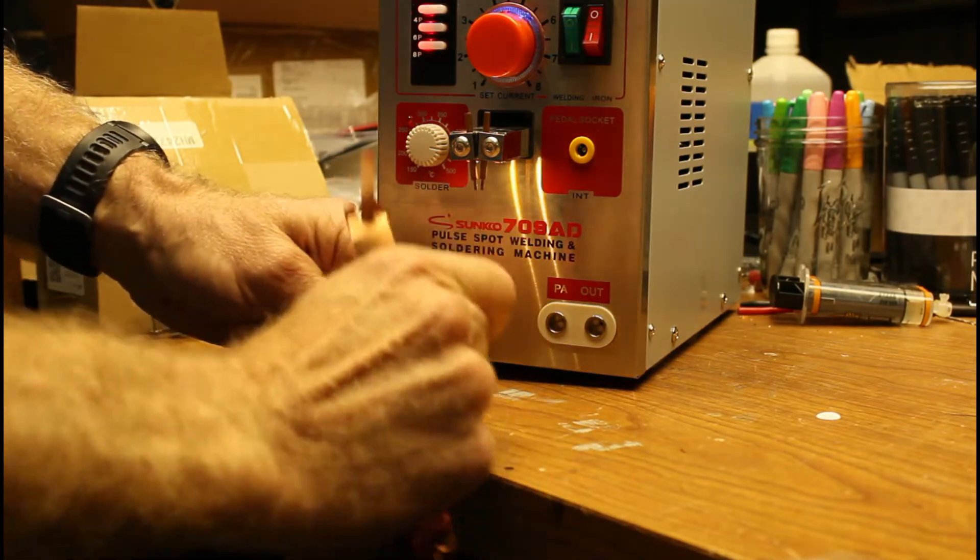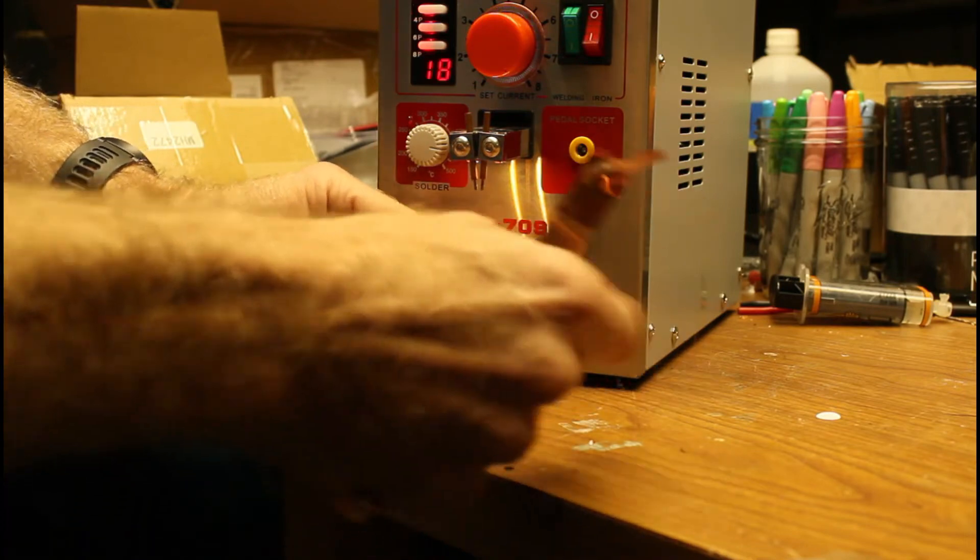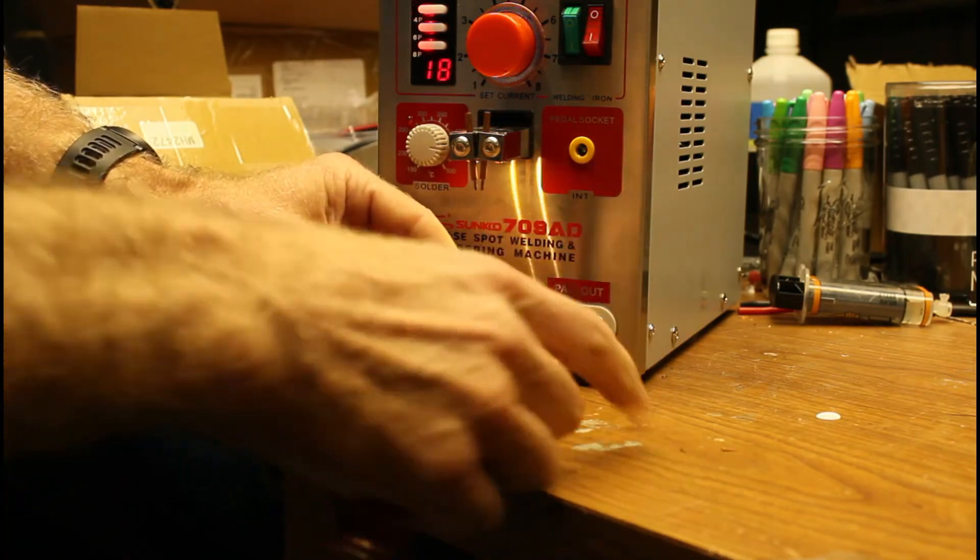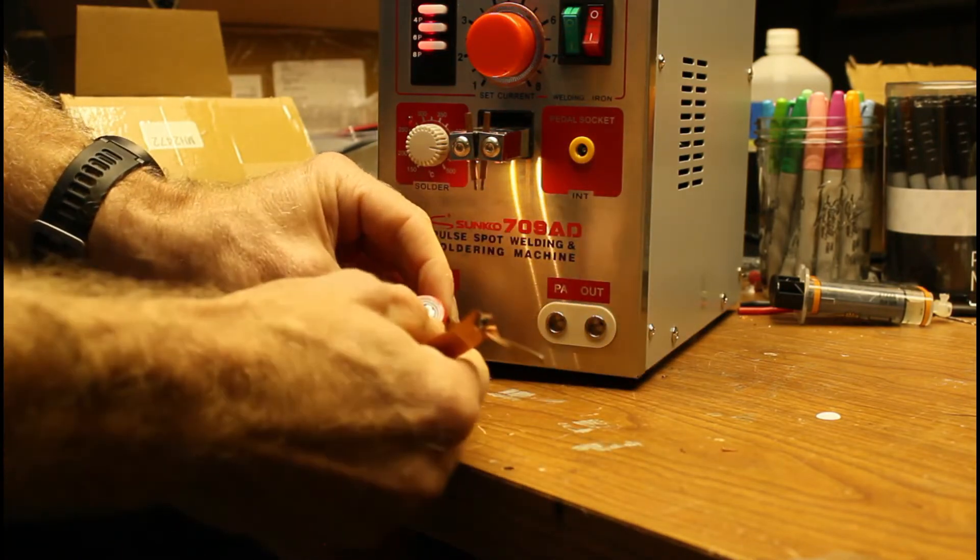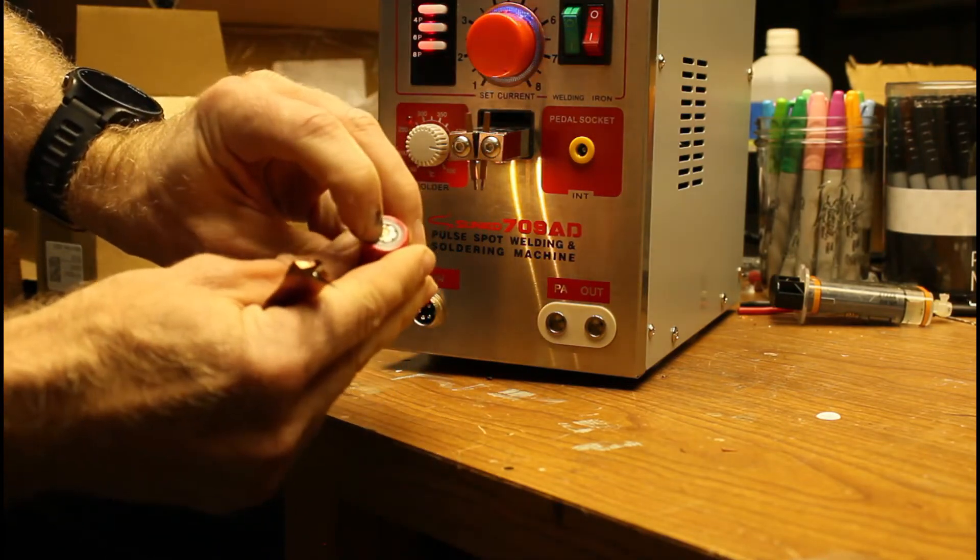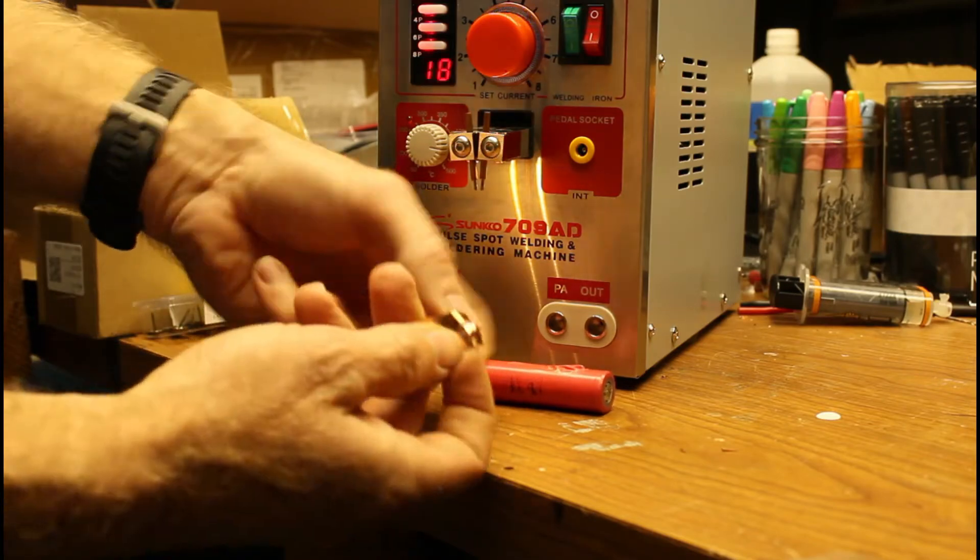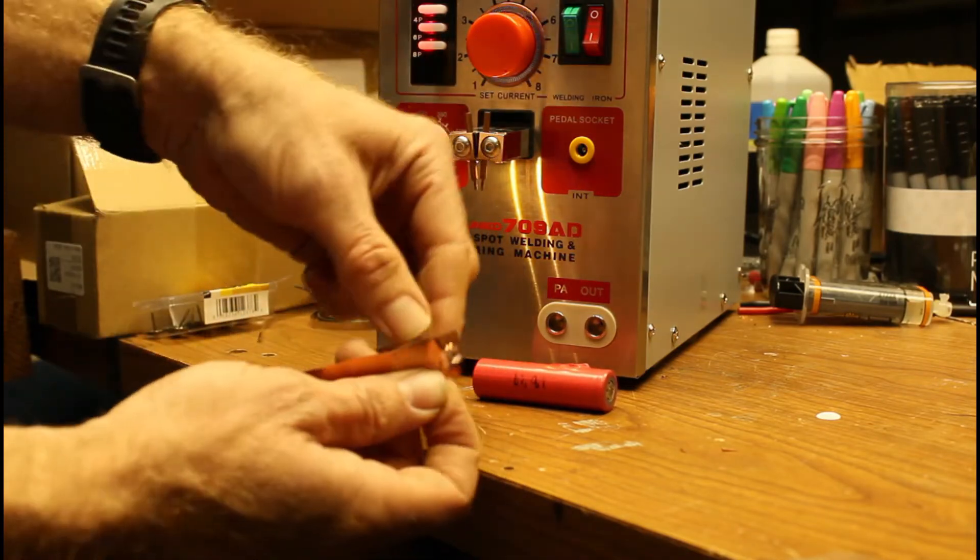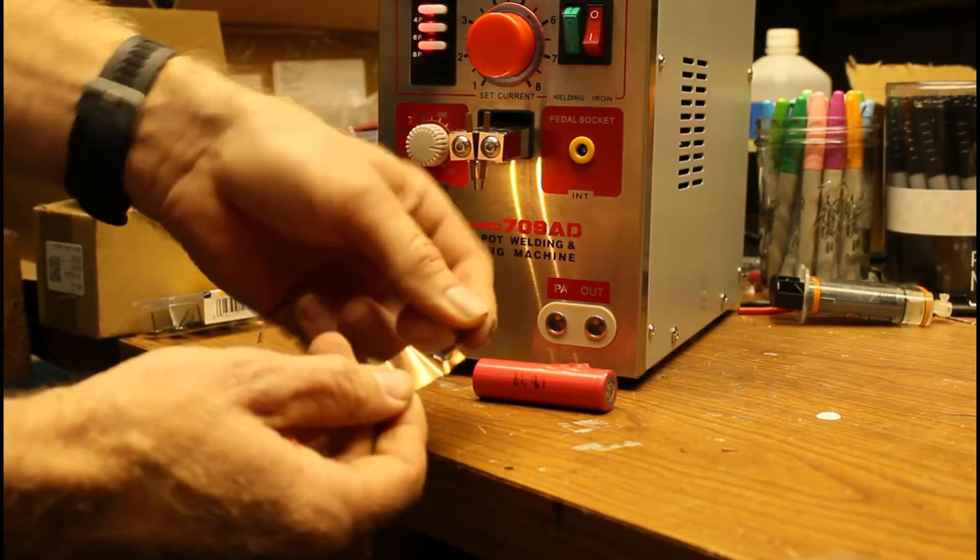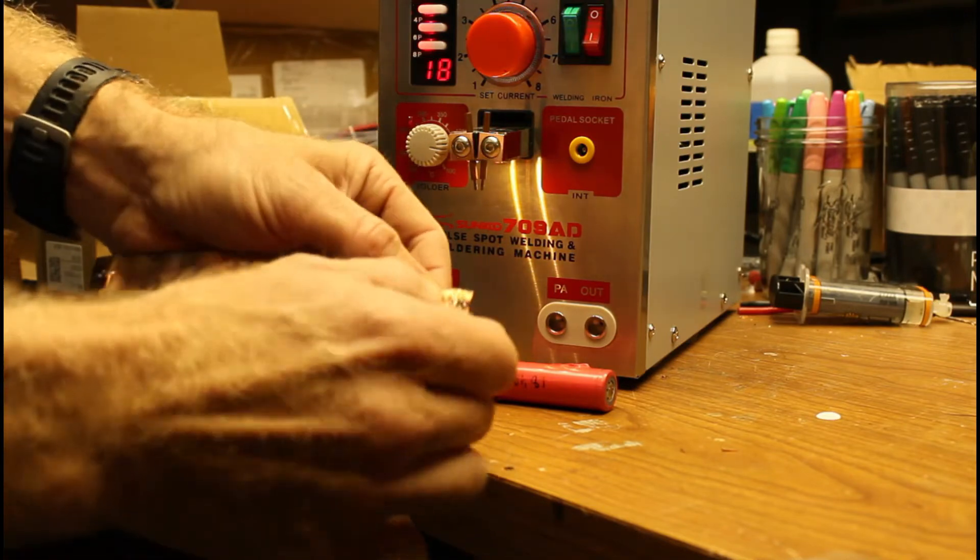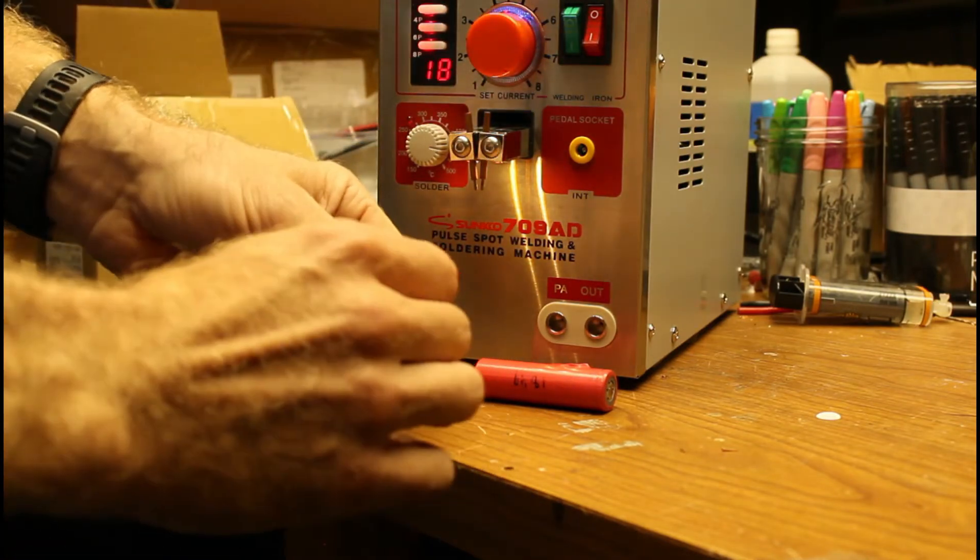As far as I'm concerned that's a good weld. That ain't coming off of there. You can break the little things off but if you can see that on the camera there's still plenty of metal contacted on that cell. This metal ripped all apart yanking it off.